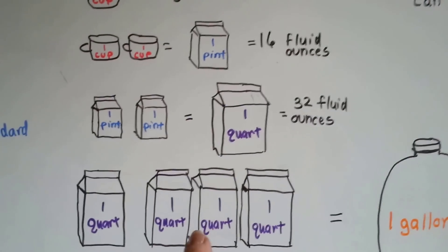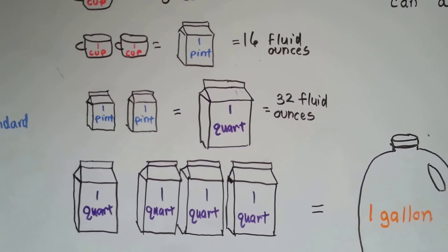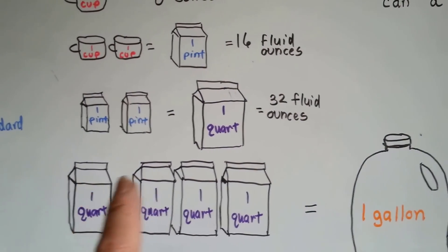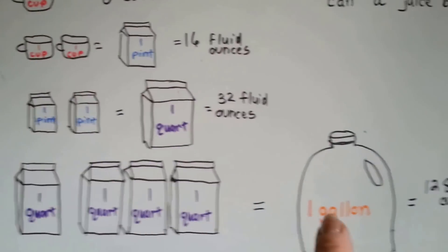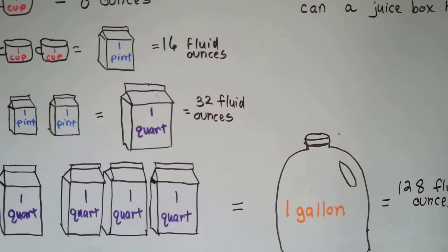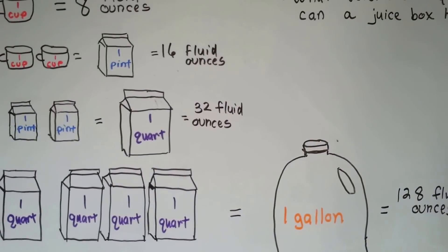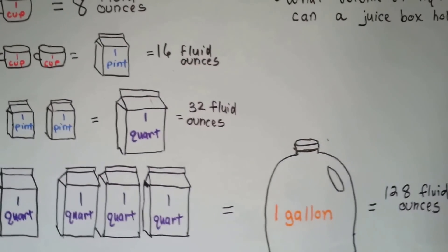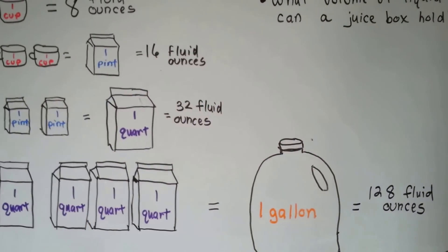There's four quarts in one gallon. And because each one of these is 32 ounces, each gallon has 128 fluid ounces. See how that works? So a gallon of milk has four quarts in it.